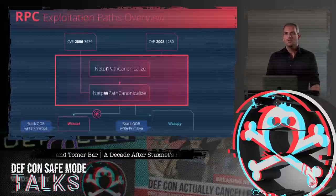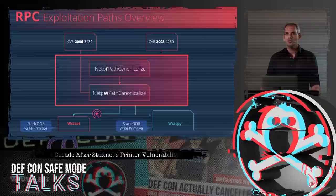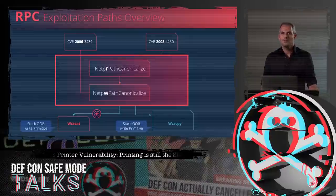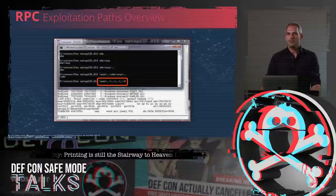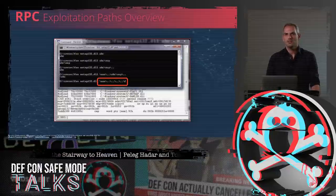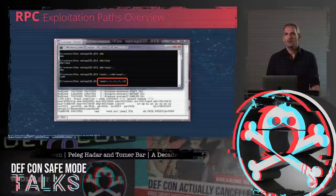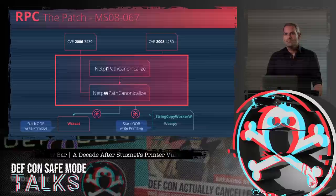The patch added a proper buffer length check, eliminating the original buffer overflow. Two years later, a newer vulnerability was discovered in the same exploitation path — this time in the RPC wrapper function called NetPR, which calls the original vulnerable function NetPW directly. The root cause is that the input path includes more slash-dot-dot-slash sequences than the number of prior directory entries, giving control over the output buffer pointer, which points backwards on the stack and triggers an out-of-bound write via wcscpy. The patch MS-867 replaced wcscpy with the safer string-copy-worker-w function.